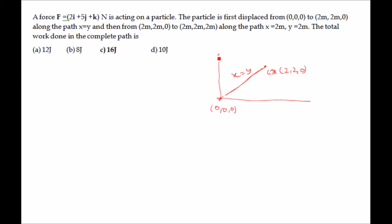There is work done in this first process, which we term W1. Afterwards, the object moves along the z-axis, outward from the plane, through a distance of 2 meters. The work done in that process is W2. This second path is along x = 2 and y = 2.